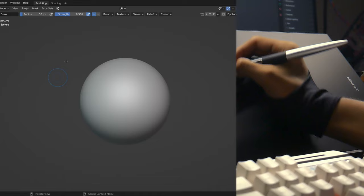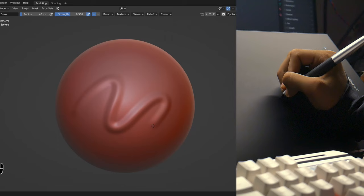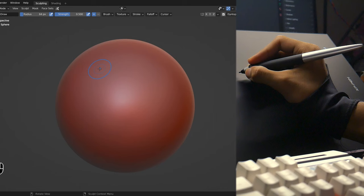Make sure that this pen pressure icon is checked for the strength value. Then we can put less pressure for a lighter stroke and we can put more pressure for a heavier stroke. We can also enable pen pressure for the radius so that the size of the brush will get smaller and bigger depending upon how much pressure we put.